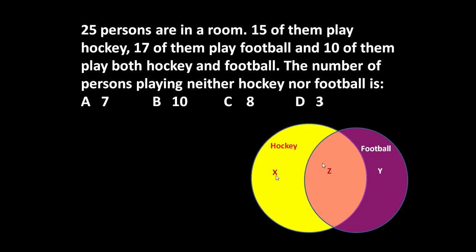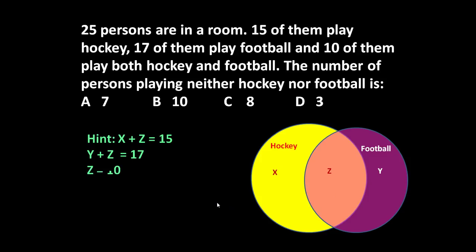15 of them play hockey, meaning X plus Z equals 15, since X and Z together are all hockey players. 17 of them play football means Y plus Z equals 17. 10 of them play both hockey and football means Z equals 10.